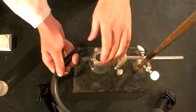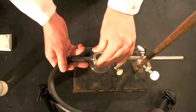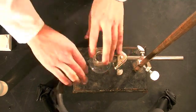Attach your hose to the vacuum and then to your sidearm flask.